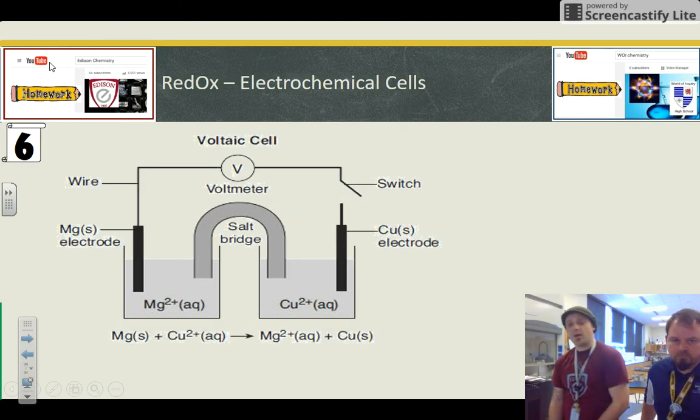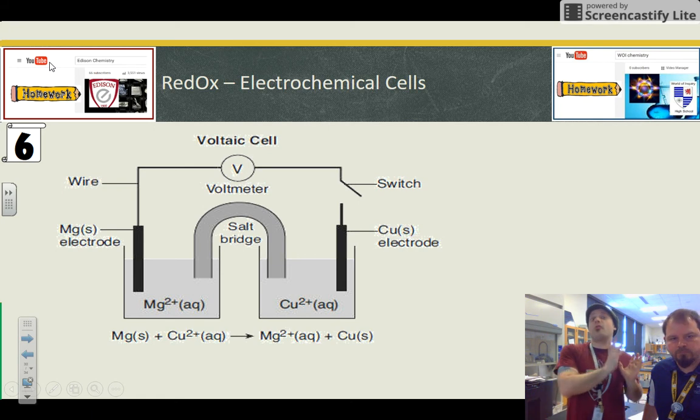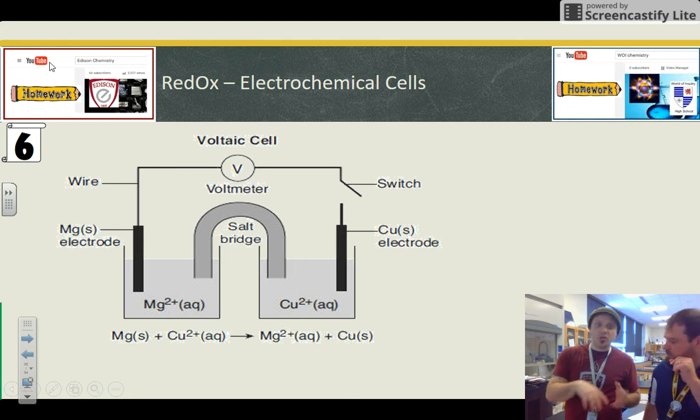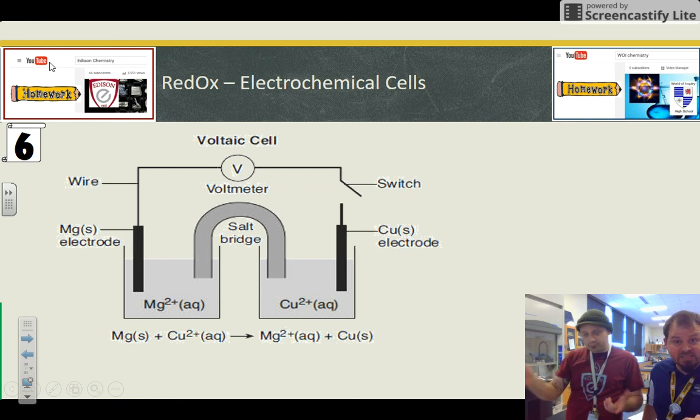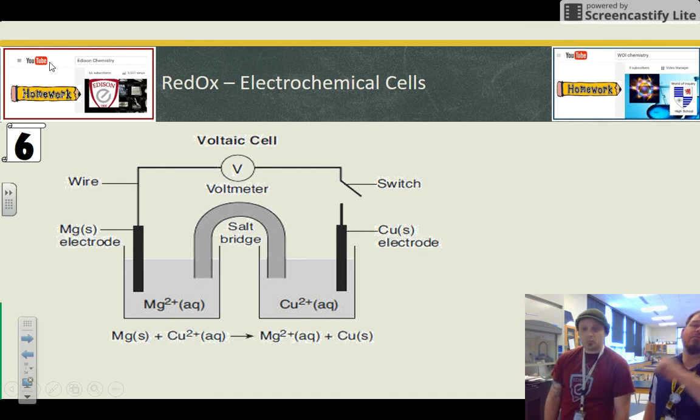And the key questions that they always throw at us is when the switch is closed, which direction will the electrons flow? They're going to flow from the anode to the cathode through the wire. So you don't want to just be like left to right, right to left. You should always say from the anode to the cathode or from magnesium to copper. And you know that because magnesium is more reactive than copper using table J from last video.